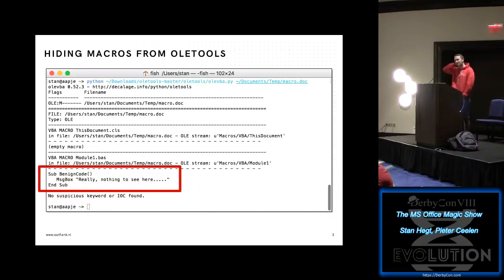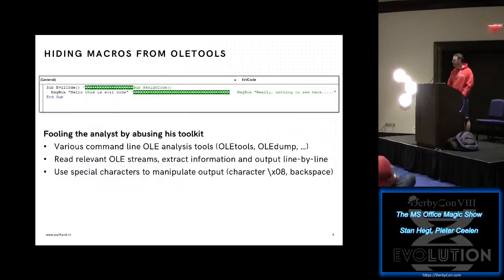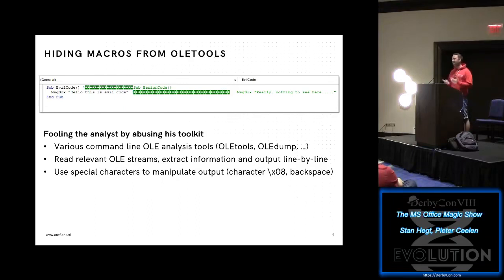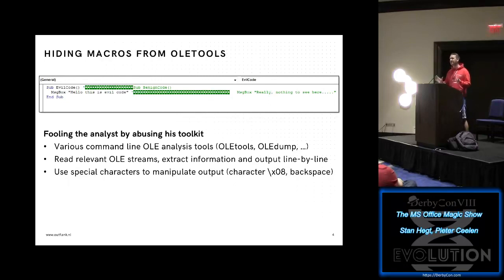One question we have to ask is: what about input validation? Can we actually trust a malicious macro? Well, definitely not. What if we just insert backspace characters in comments after our lines? I have tested this on a number of tools, including Oletools, Oledump, and other favorites. Many of them — actually most of them — are vulnerable to this. I've reached out to the most important ones, including Oletools, and there will be a fix. Please help us spread this to other tools being developed in this area.